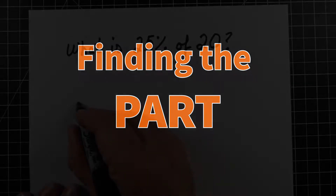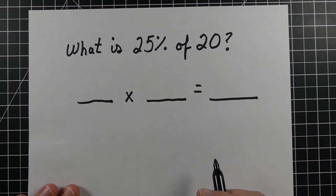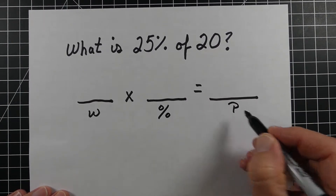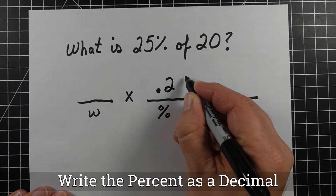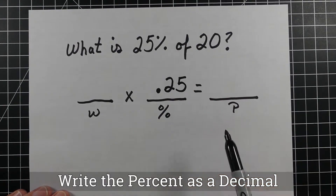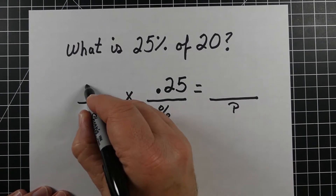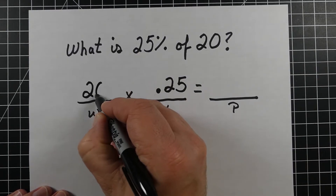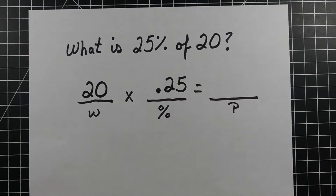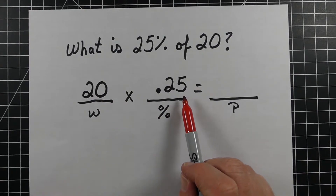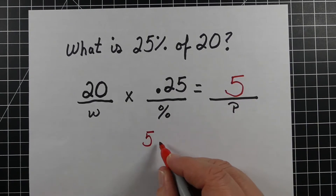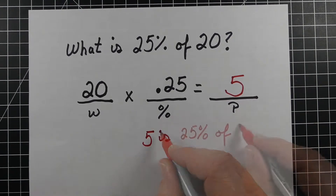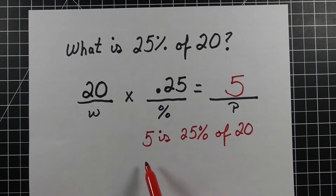The first situation is finding the part. I like to draw three blanks: one for the whole amount, one for the percent, and one for the part. Looking at a problem, I first check for a percent. If there is one, I write it as a decimal — for example, 0.25 instead of 25%. Then I look for the whole or the part. With a whole amount of 20, we just multiply: 20 times 0.25 equals 5. So 5 is 25% of 20.